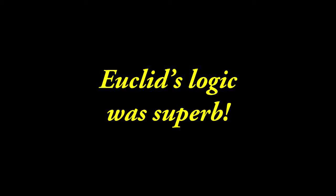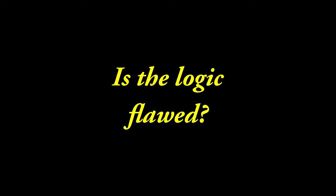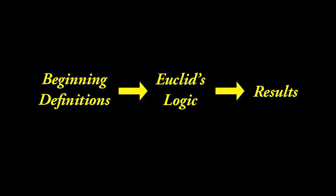For ages, great thinkers tried to find mistakes in Euclid's logic. Euclid's logic was superb — apparently nobody ever discovered any significant flaws. Then some mathematicians came up with a new way to test the logic of Euclid's geometry. What they realized was that geometry had beginning definitions. These beginning definitions feed into Euclid's logic and give specific results. Instead of looking at Euclid's logic, they decided to look at the beginning definitions.